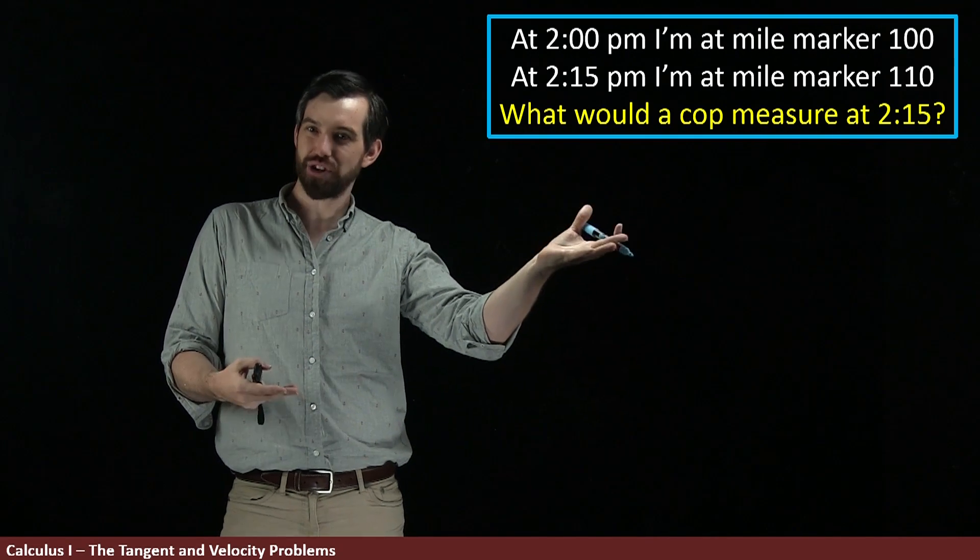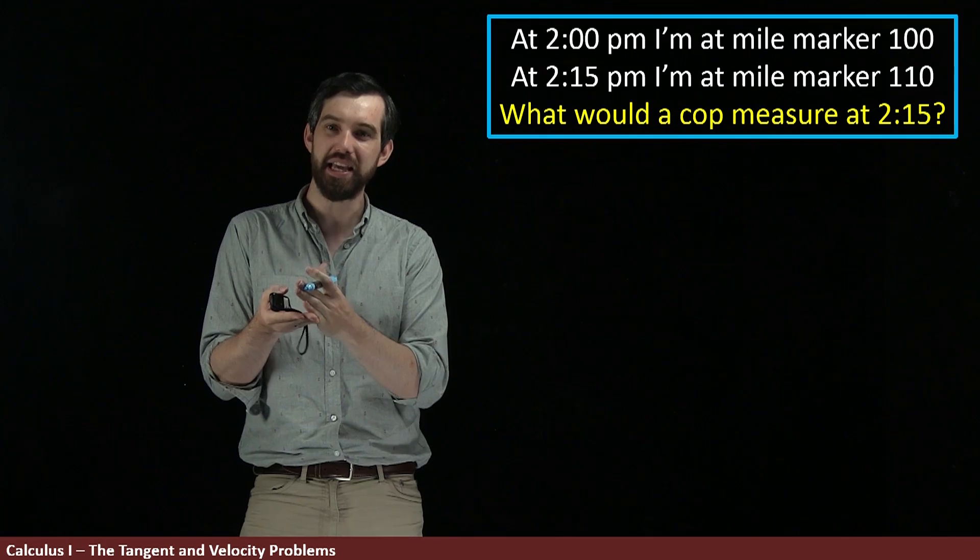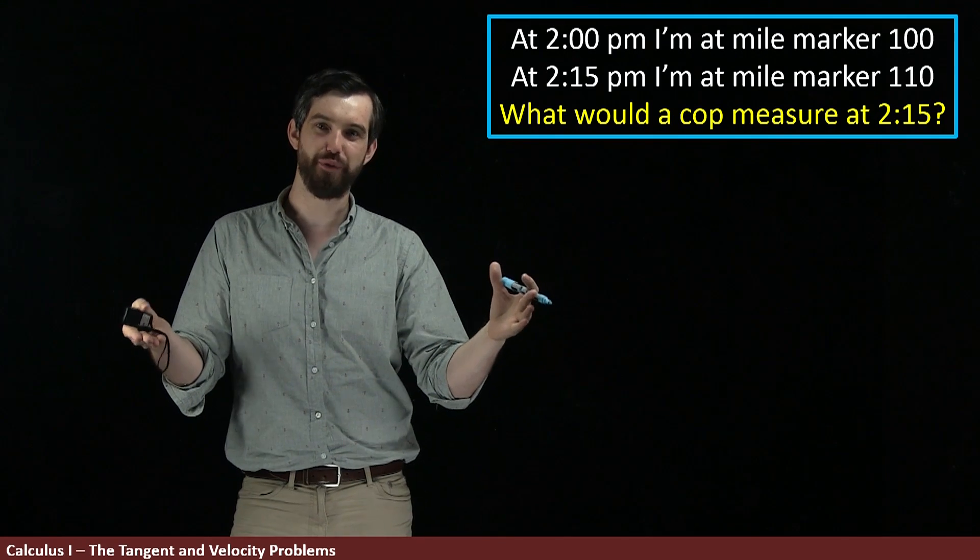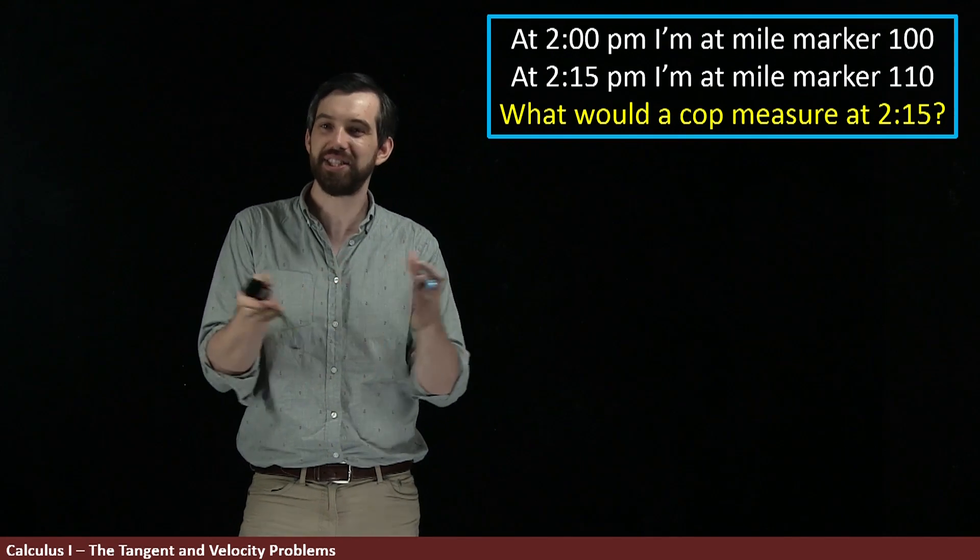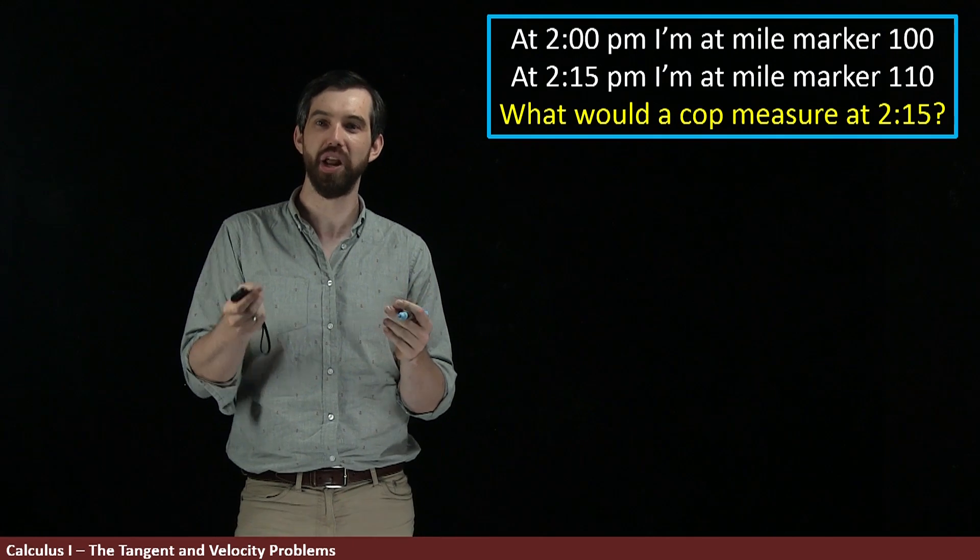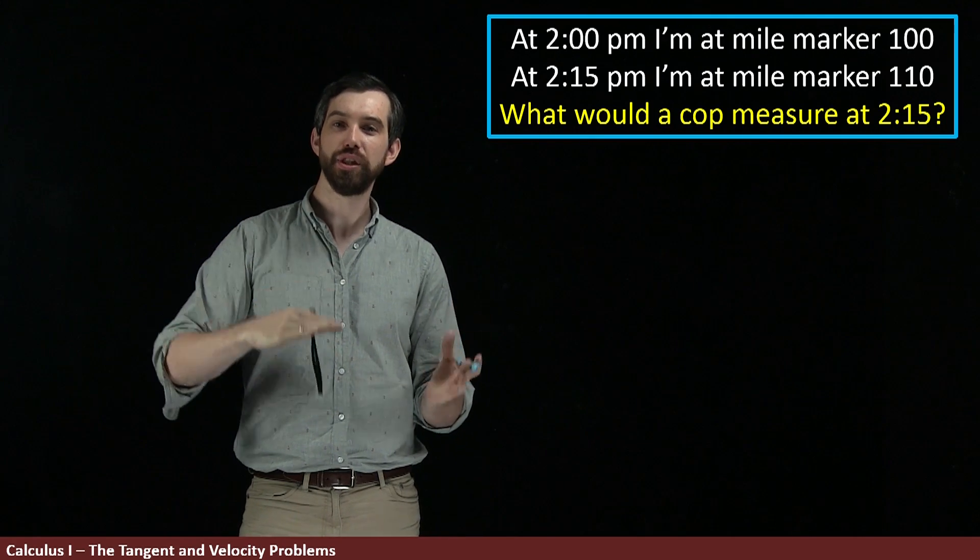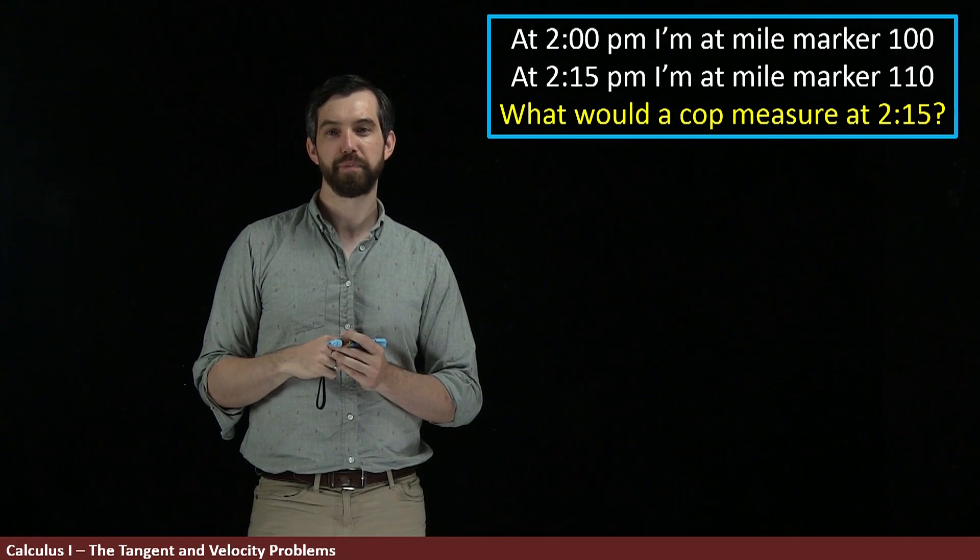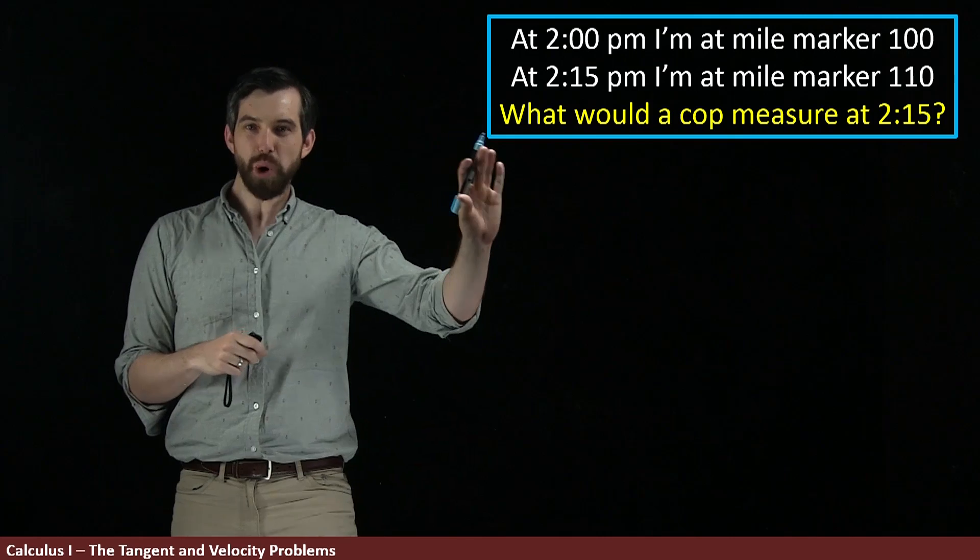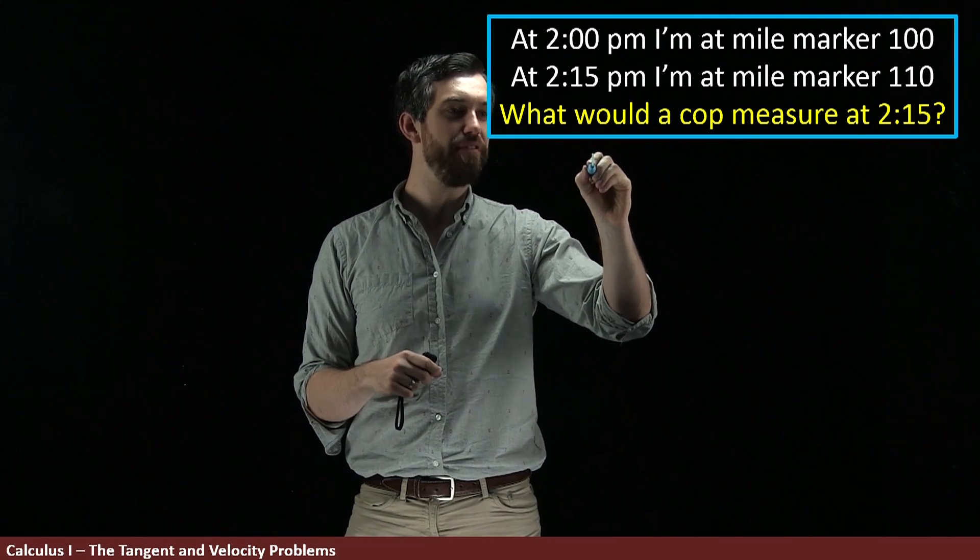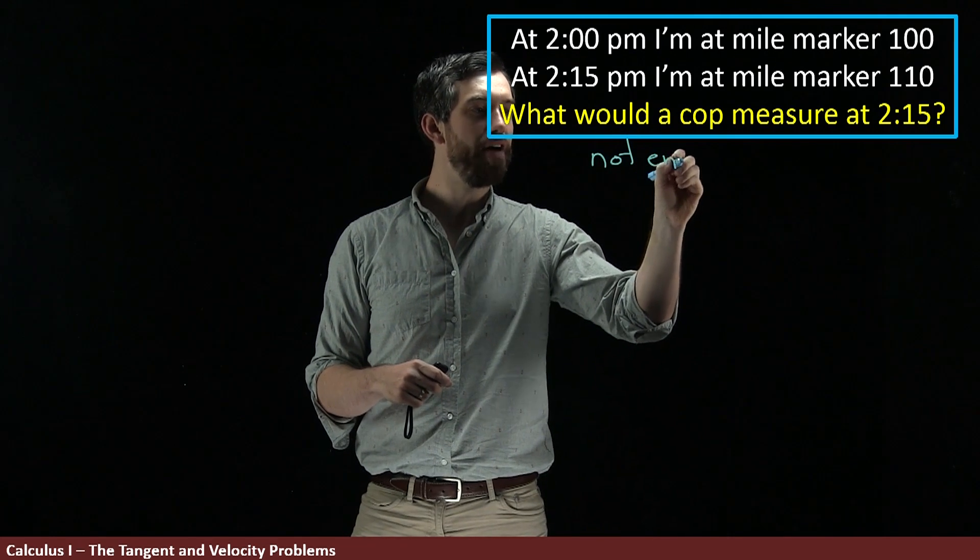The cop might not measure us having this higher speed because the average velocity was going to be 40 miles per hour even though at some point in the middle we'd been traveling way faster than 40 miles per hour and at some points we're traveling way slower than 40 miles per hour. So this problem, it turns out that we have not enough information.